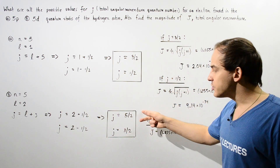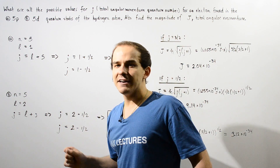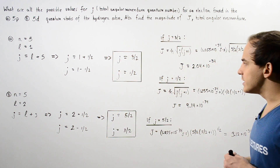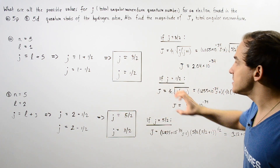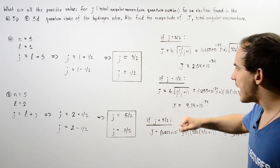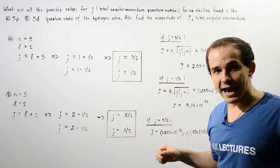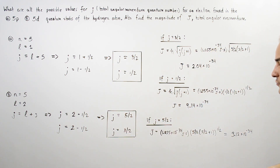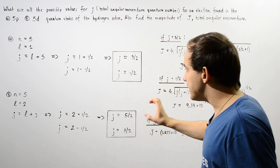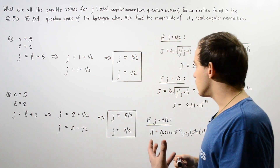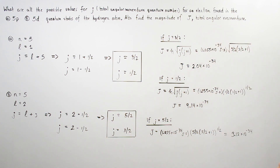These are the two values for the total angular momentum quantum number for the single electron in the 5D quantum state. Notice that if we examine these two pairs of numbers, each pair shares the same J value. In part A, one of the J's is 3/2, and in part B, one of the J's is also 3/2. That basically means that the total angular momentum for those two J values will be exactly the same.